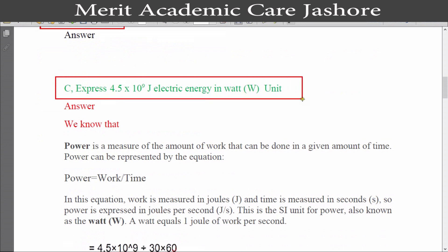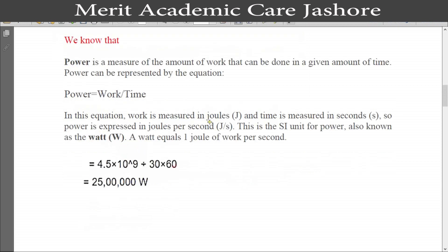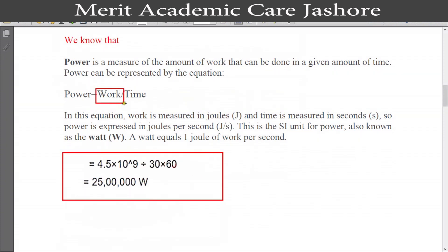Our next question is question C: express 4.5×10⁹ joule of electric energy in watt unit. We know that power is a measure of the amount of work done in a given amount of time. Power equals work divided by time. Work is measured in joules and time in seconds, so power is expressed in joules per second — the SI unit of power, also known as watt. One watt equals 1 joule per second. Here, work means the electric energy (4.5×10⁹ J) and time is 30 minutes, converted to seconds as 30 × 60. Calculating this, we get 25 lakh (2,500,000) watts. This is our question C answer.